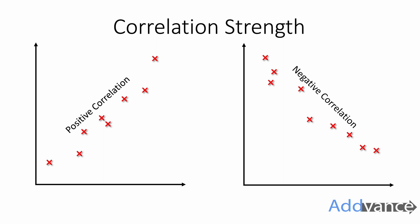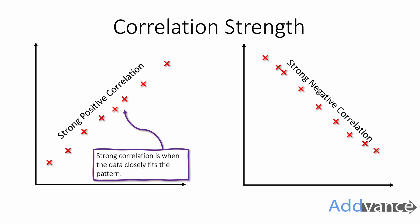We can also describe the strength of the correlation. So we can have really strong correlation where all the points fit the trends closely. It fits the pattern really well. Or we can have strong negative correlation where again the data is going down, but here the points are really close together. They fit the pattern really strongly.